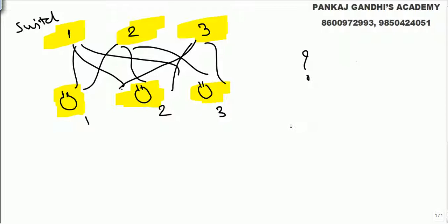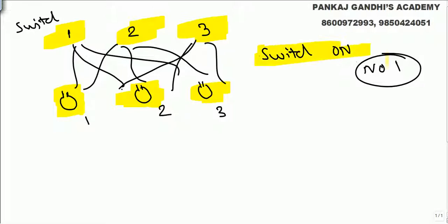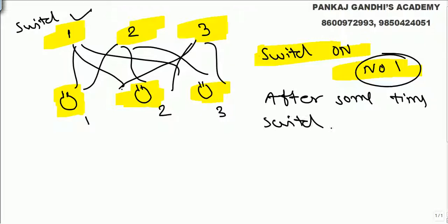Once we open the door, we cannot change the switches. What we will do is: first, we will switch on switch number one and leave it on for some time. After some time, we are going to switch it off. We are standing outside the room — we switched on the first one and after some time switched it off, so obviously that bulb glowed for some time and became hot.